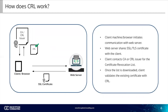How does CRL work? The client machine or browser initiates communication with the web server. Then the web server shares the SSL/TLS certificate with the client. The client contacts the CA or CRL issuer for the certificate revocation list, and once the list is downloaded, the client validates the existing certificate with the CRL.